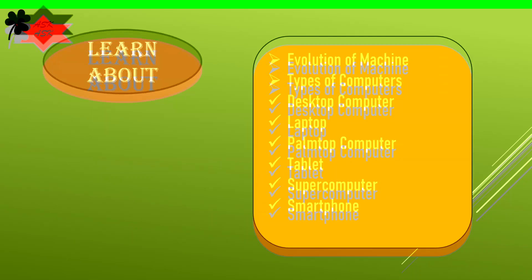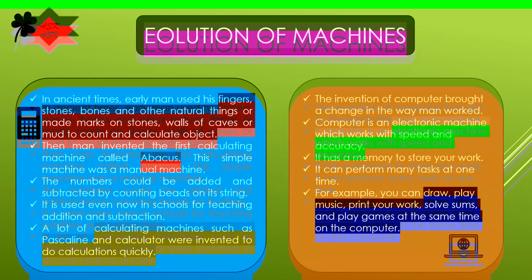Today we will learn about the evolution of machines and types of computers: desktop computer, laptop, tablet, supercomputer, and smartphone. Smartphones are the latest technology and are like mini computers.